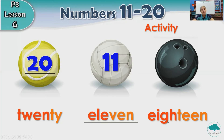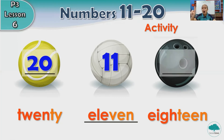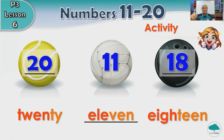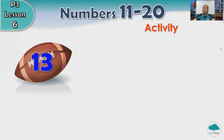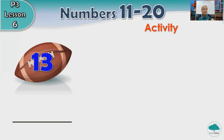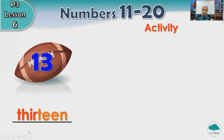Can you guess? 18. Very good. How do we write 18? Number 1 and 8. 18. You're doing great. Two more to go. What number is this? 1 and 3 makes number 13. Very good. How do we spell 13? T-H-I-R-T-E-E-N. Thirteen.